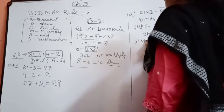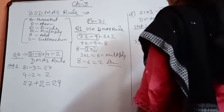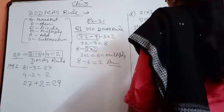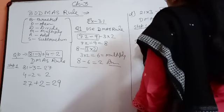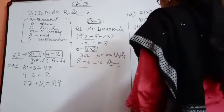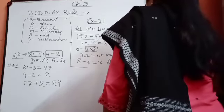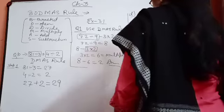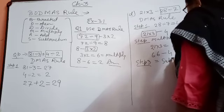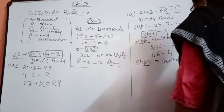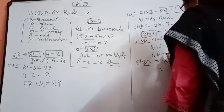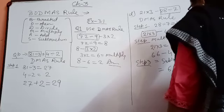Step 2 is multiply. So 21 into 3 is equal to 63. In place of 21 into 3, write 63, minus 4. Step 3 should be addition, but here no addition sign is given, so step 3 is subtraction. 63 minus 4 — how much? 62 will be your answer.